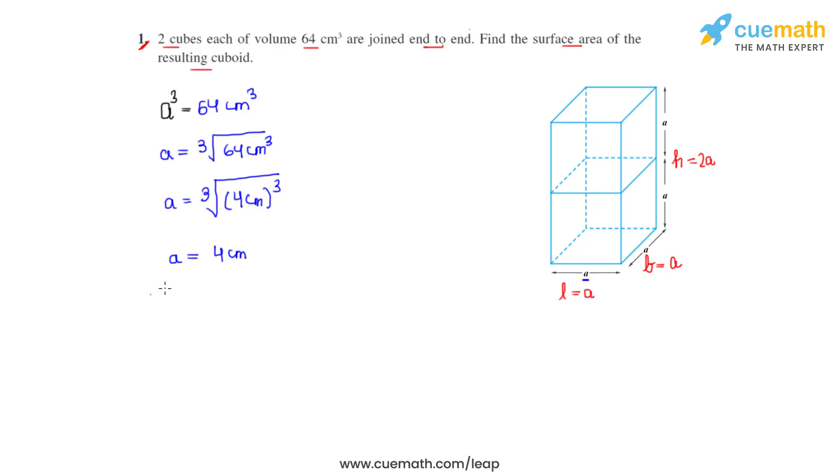To find the surface area of a cuboid, we know the formula is 2(LB + BH + HL), where L is the length, B is the breadth, and H is the height of the cuboid. So let's substitute the values.